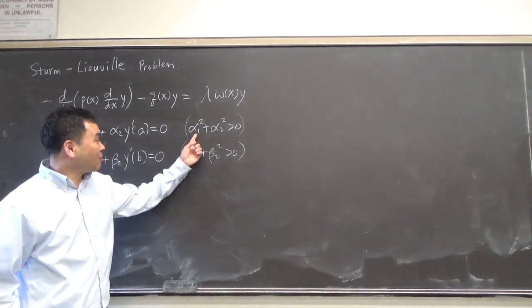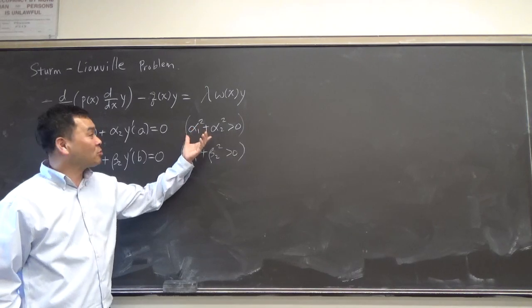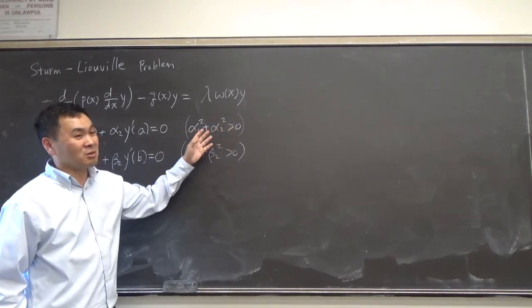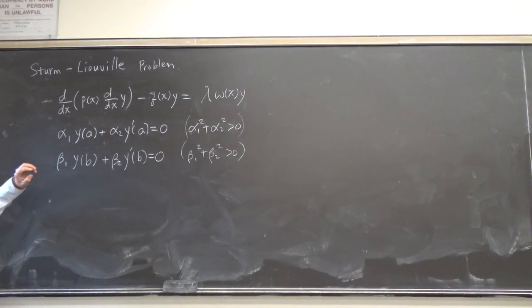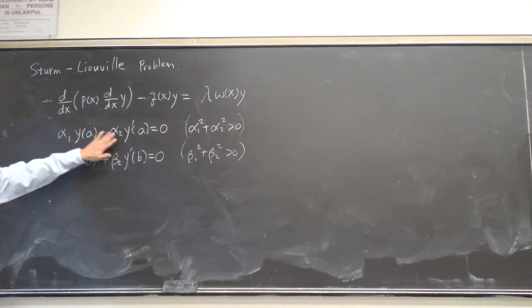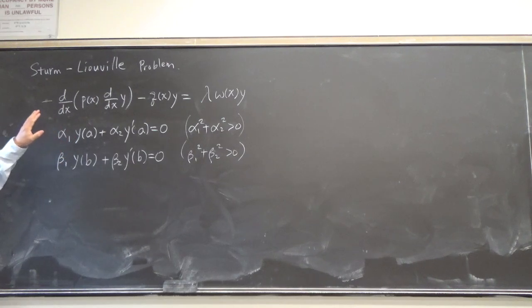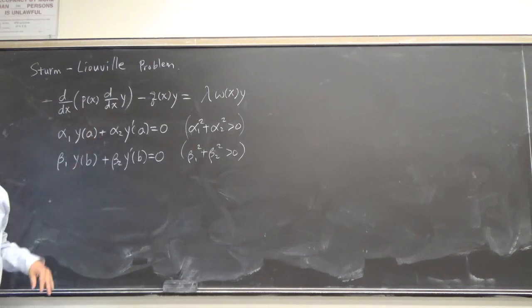There's this condition: α₁ squared plus α₂ squared greater than zero. Well, α₁ and α₂ are real numbers, so the only way this could equal zero is when both are zero. This is just a slick way to say that at least one of them should be non-zero. You could have one and zero, meaning y(A)=0, or zero and one, meaning y'(0)=0. You can have any mix of conditions for y or y' at the two endpoints A and B, and inside the interval you want this equation to hold.